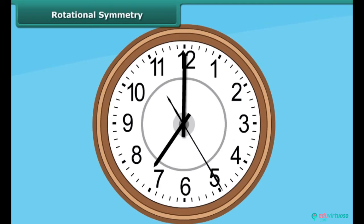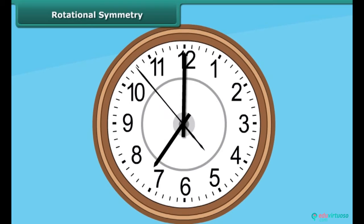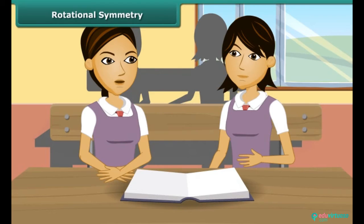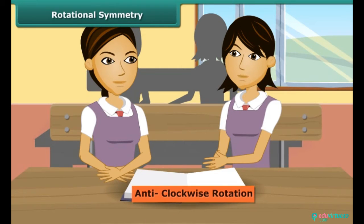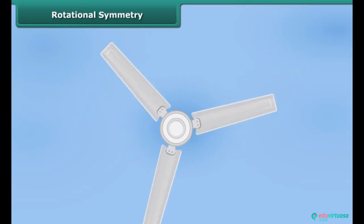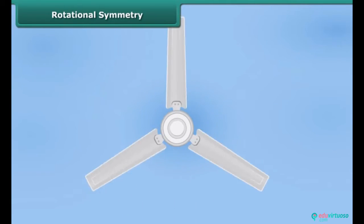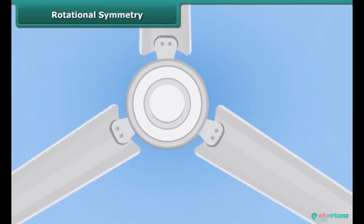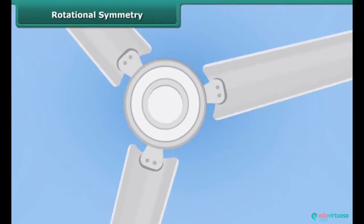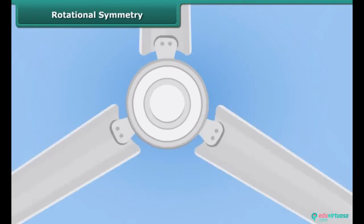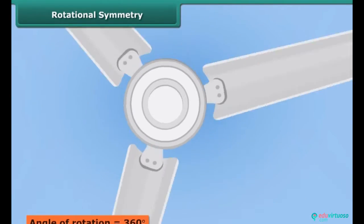Now look at this clock — it's going round and round, which means it is rotating. The hands of the clock rotate in a clockwise rotation. When something rotates other than clockwise, we call that rotation anticlockwise rotation. When an object rotates, its shape and size do not change. This rotation turns an object about a fixed point, which is called the center of rotation.